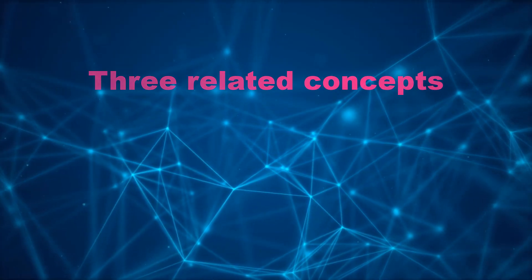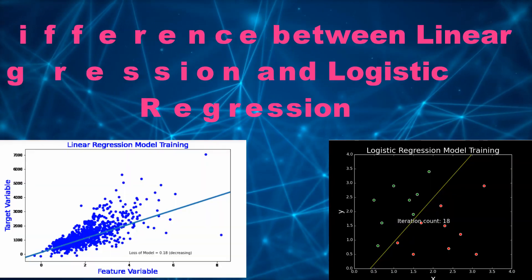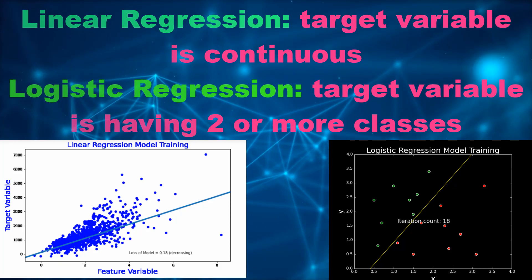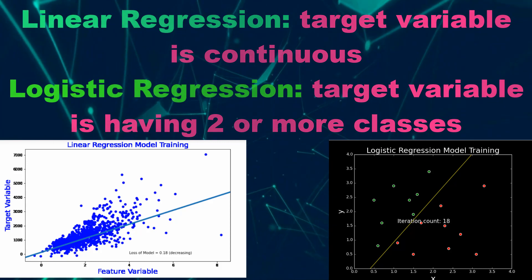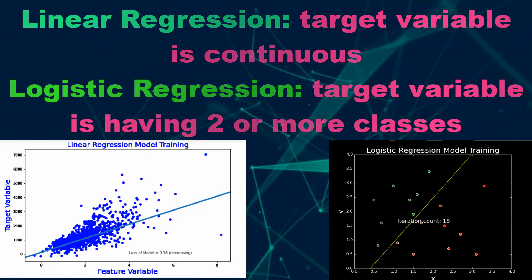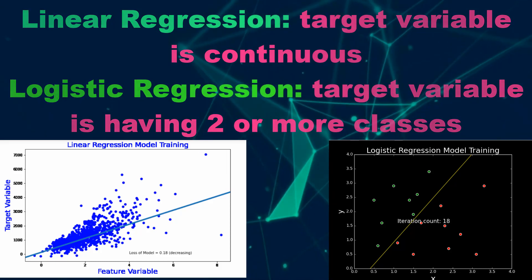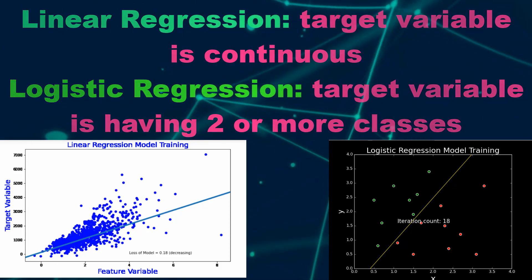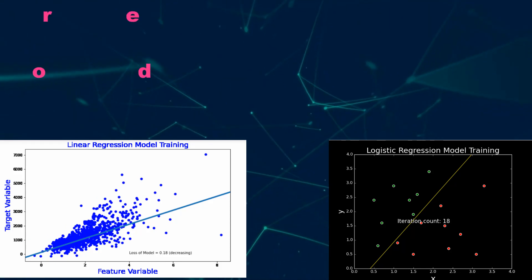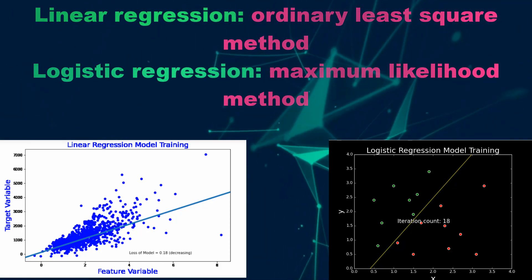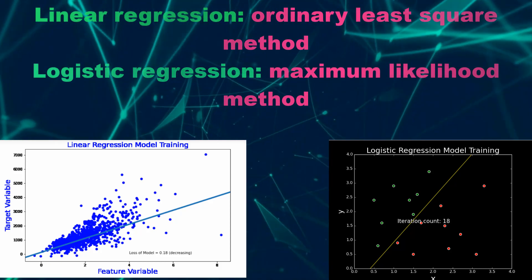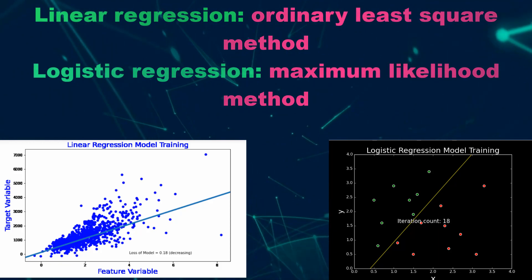Before we proceed further, we should discuss three concepts used in this tutorial. The first concept is the difference between linear regression and logistic regression. Linear regression is used when the target variable is continuous in nature — for example, height, numbers, or price. However, logistic regression is used when the target variable has two or more classes. Linear regression uses the ordinary least square method to minimize prediction error, while logistic regression uses the maximum likelihood method.